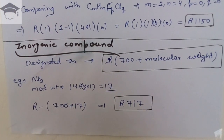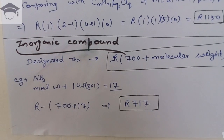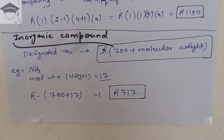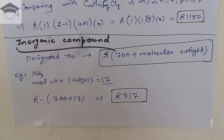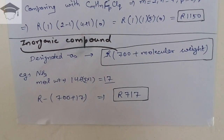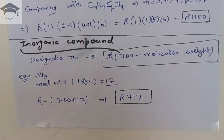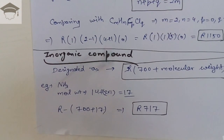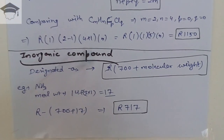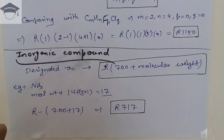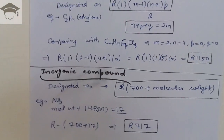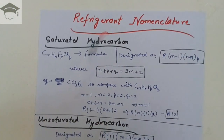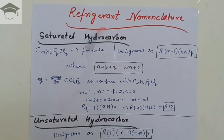NH3 is designated as R717. Similarly, for water, the molecular weight is 18, so it is designated as R(700 + 18) = R718. Therefore R717 is the refrigerant name for ammonia and R718 is the refrigerant name for water.